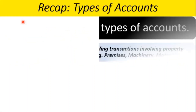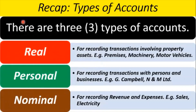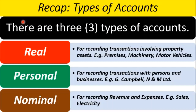Recap: types of accounts. There are three types of accounts. Real accounts for recording transactions involving property and assets — examples: premises, machinery, motor vehicles. Personal accounts for recording transactions with persons and businesses — examples: G Campbell or N&M Limited. Nominal accounts for recording revenue and expenses — examples: sales as revenue and electricity as expenses.